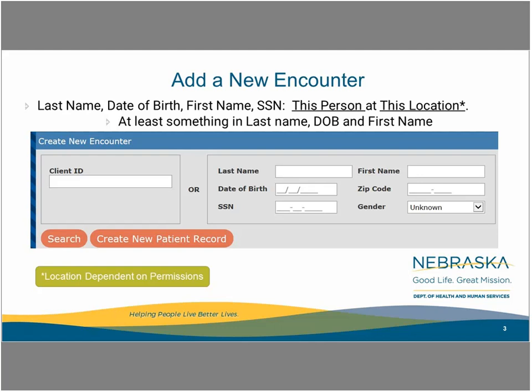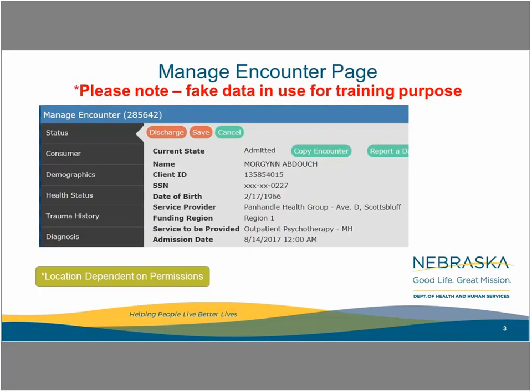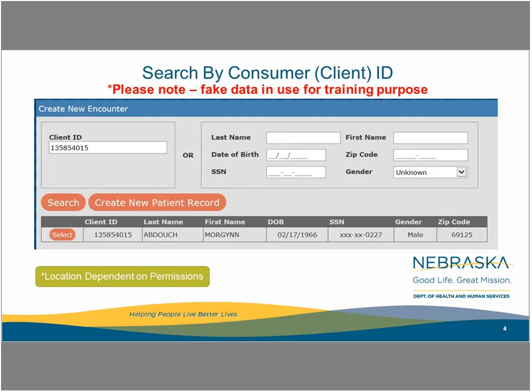This permission is set at the location of the end user or for the agency the end user is employed. Changes to end user permission can be made through the location agency super user. This is an example of a managed encounter page within the test site — information here is fake and used for training purposes. Note that there is a client ID just under the name along with the social security number. We've used the consumer ID from the last record to show how specific the consumer ID will be in the list of consumers that match the variables of this first screen.